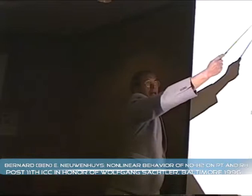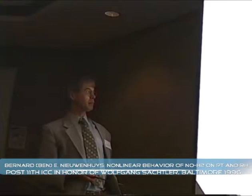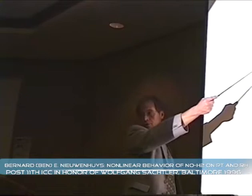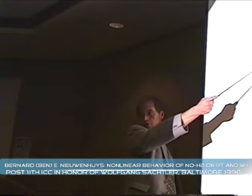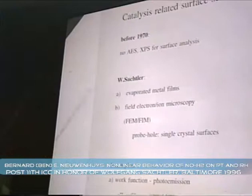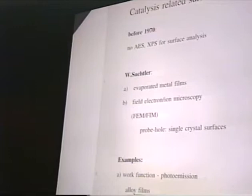In the 1960s, there was no way to analyze the surface — chemical analysis of surfaces was simply impossible at that time. So, in order to prepare clean surfaces, Wolfgang evaporated the film on the substrate. Another technique that was used was the field electron and field ion microscope. The field ion microscope was the only technique able to image metal surfaces at atomic resolution.